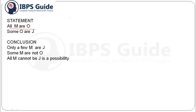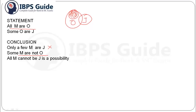Next question: 'All M are O' and 'Some O are J.' Conclusion one: 'Only a few M are J.' Can we draw any definite relationship between M and J? There is no definite relationship, so we cannot definitively say only a few M are J or not — this doesn't follow. Conclusion two: 'Some M are not O.' If all M are included within O, how is it possible that some M are not O? So this also becomes wrong. Conclusion three: 'All M cannot be J is a possibility.' This is a negative possibility and there is no direct relationship between M and J, so possibility becomes true.